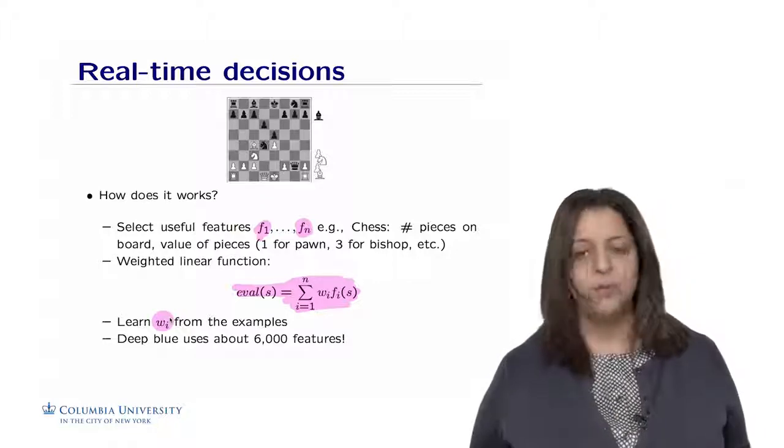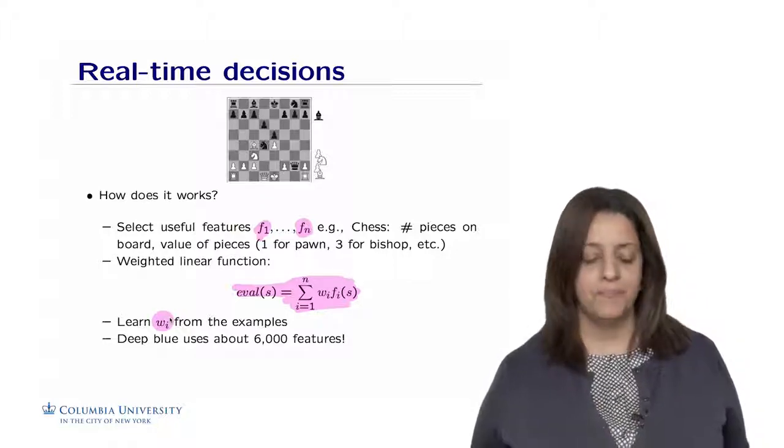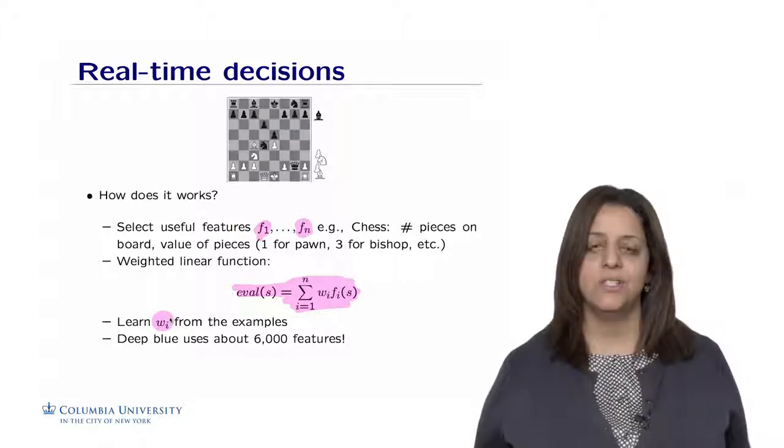So just as an example, Deep Blue has used over 6,000 features as a function that were combined together to evaluate the game and stop earlier in the search tree.